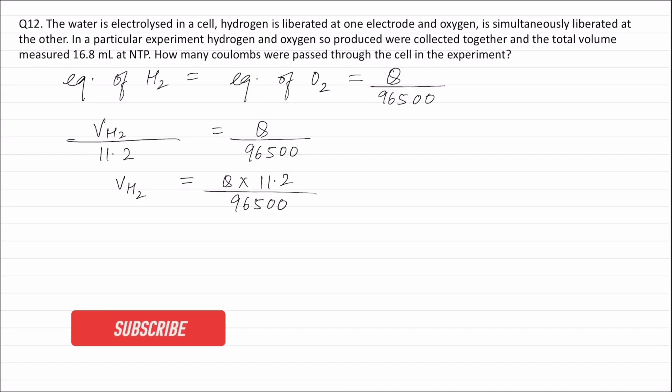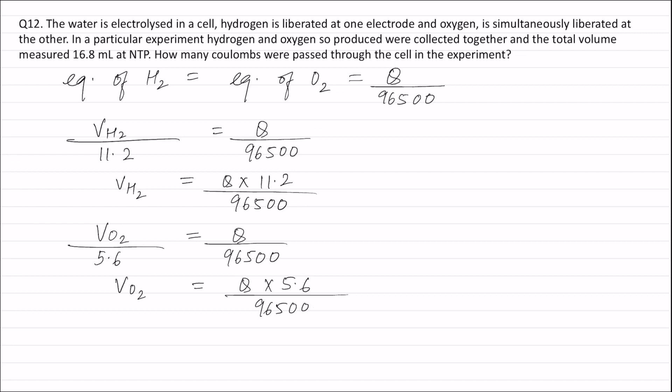Similarly, equivalence of oxygen can be written as volume of oxygen, let it be VO2, divided by equivalent volume of oxygen, that is 5.6 liters, and this is equal to Q divided by 96,500 coulombs. From this, volume of oxygen will be equal to Q into 5.6 divided by 96,500 liters.